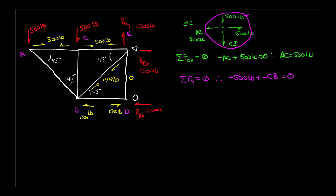When I solve for CB I get CB equals minus 500 pounds. All that means is the vector I drew has a magnitude of minus 500 — that's the same as saying 500 pounds in the opposite direction. It just means I drew my vector backwards. So I reverse the vector and update the diagram: CB is 500 pounds going up, and it has to be going down on the other side of the member. I've now solved for all forces at C.